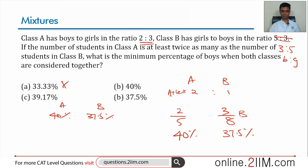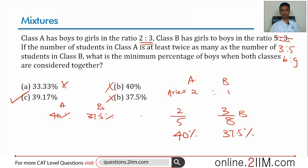It will not be 40% itself, because that would mean only class A is present. We can have class B as well, which will reduce the percentage. So the answer is closer to 40% but less than 40%. Based on this reasoning, we can eliminate the other answer choices — this is the answer, and we're done.